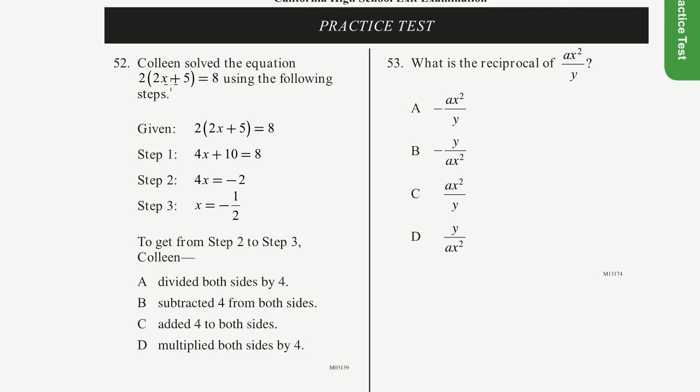Problem 52. Colleen solved the equation 2 times 2x plus 5 is equal to 8, using the following steps. OK, so she has a bunch of steps.